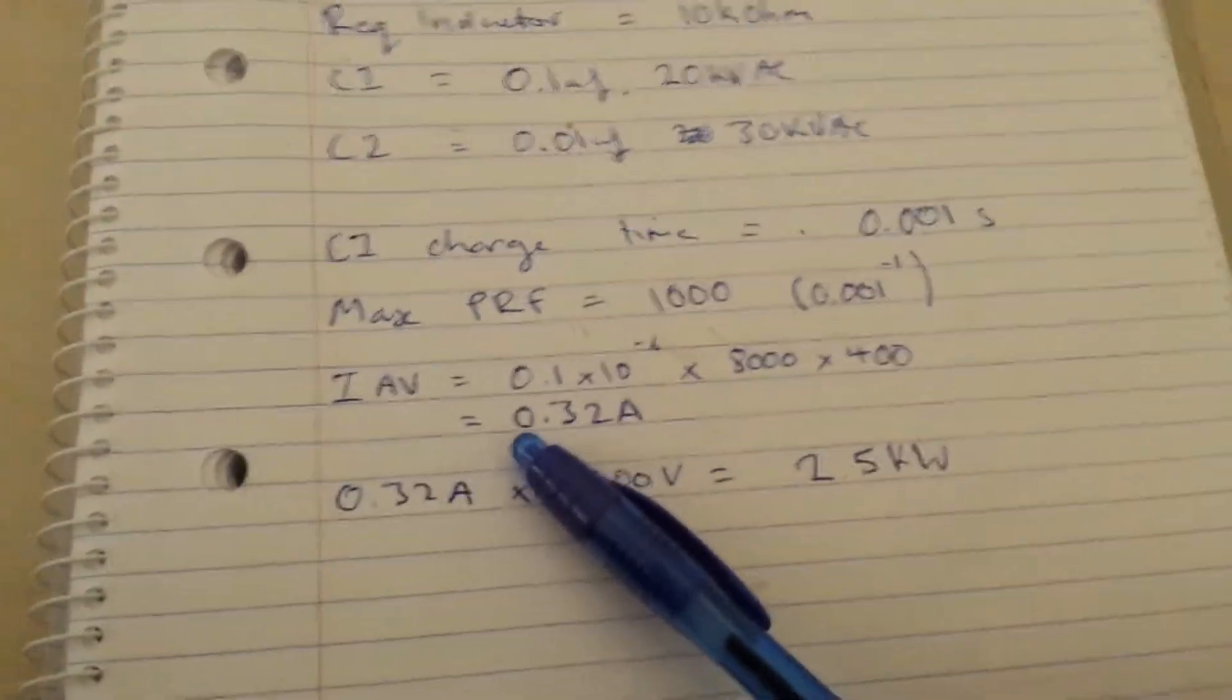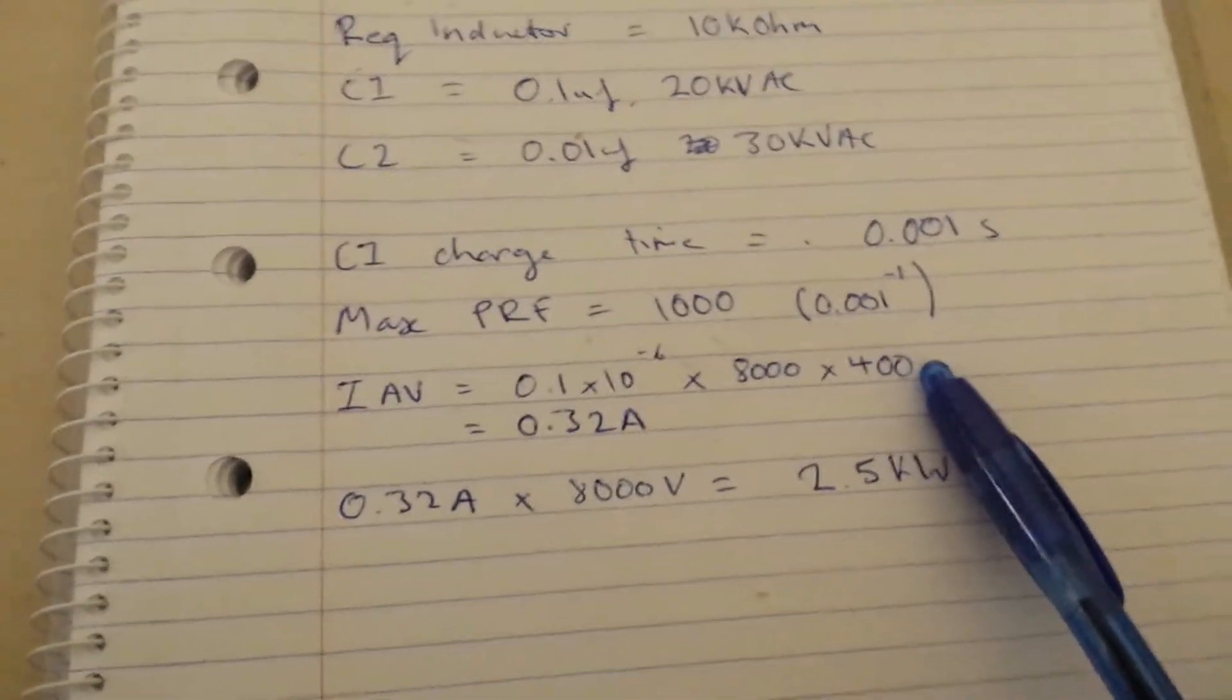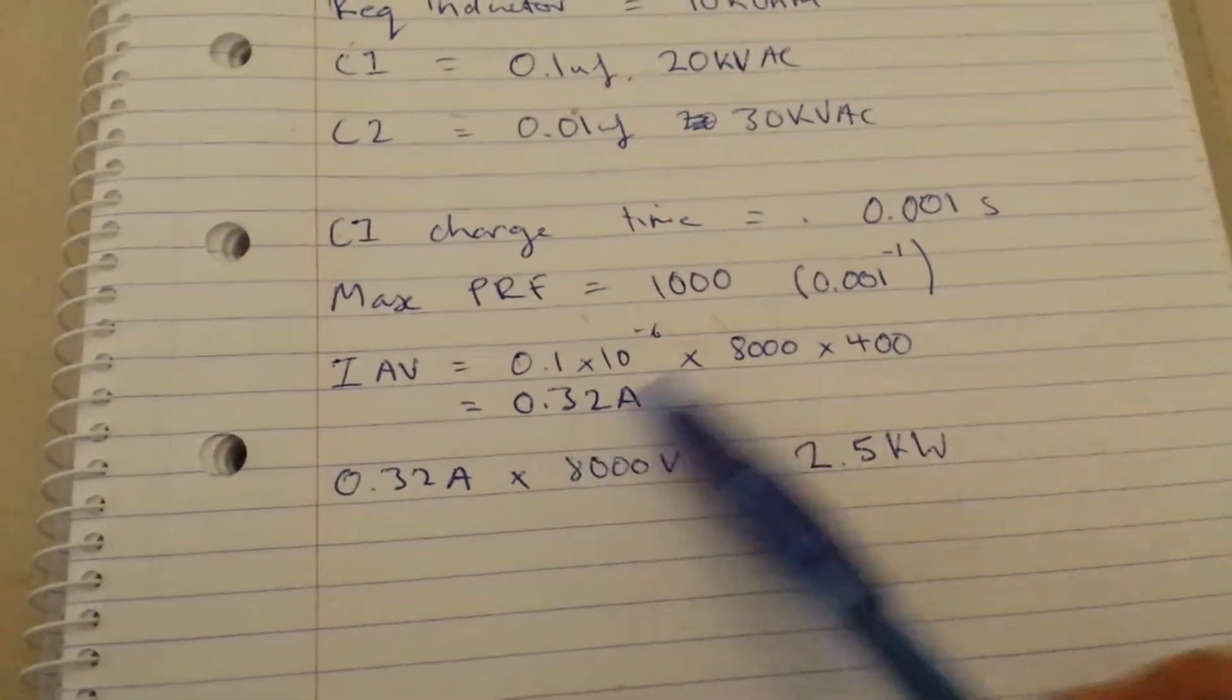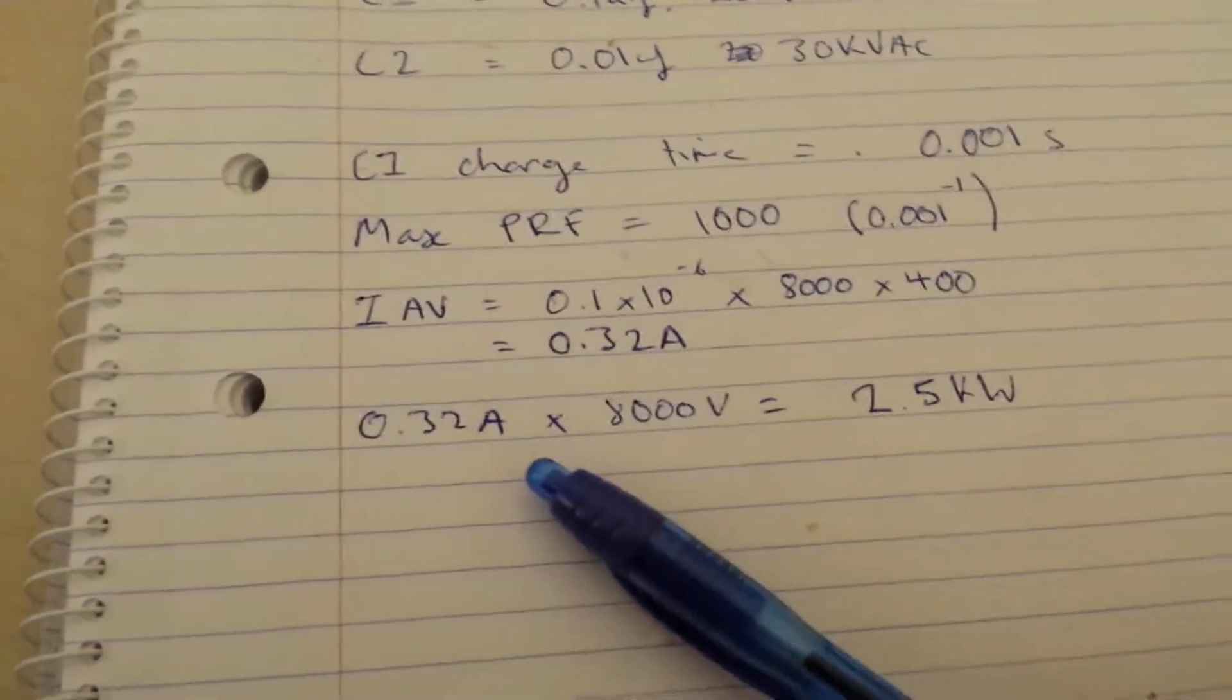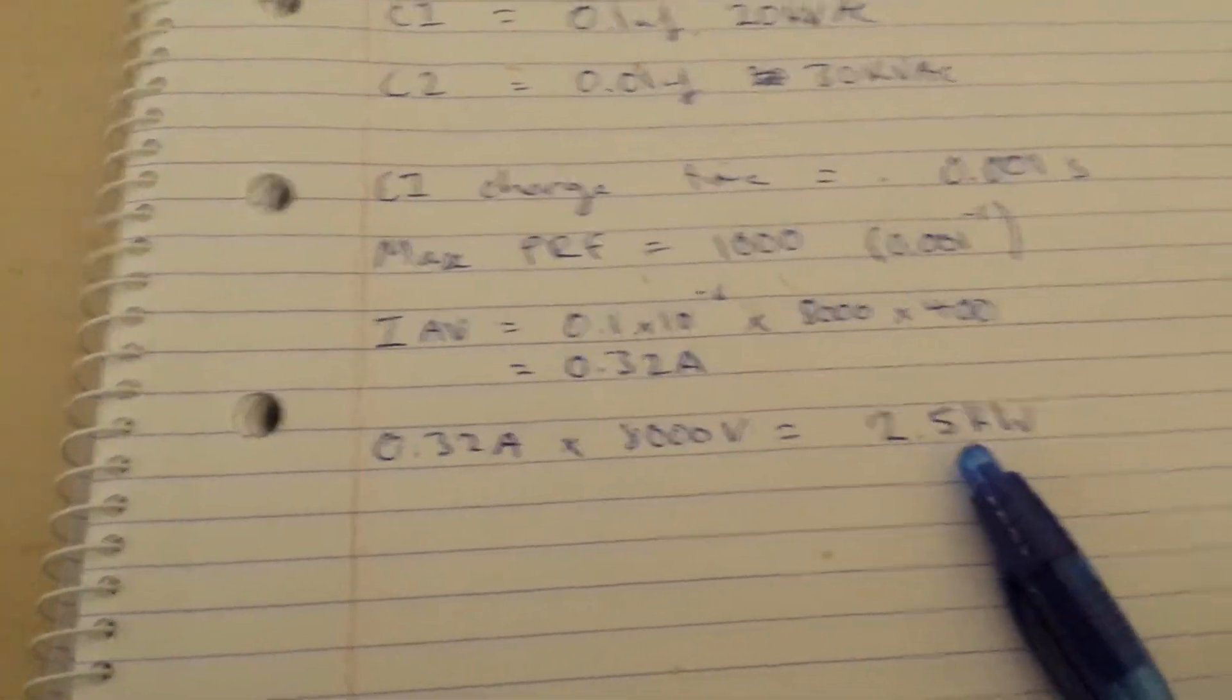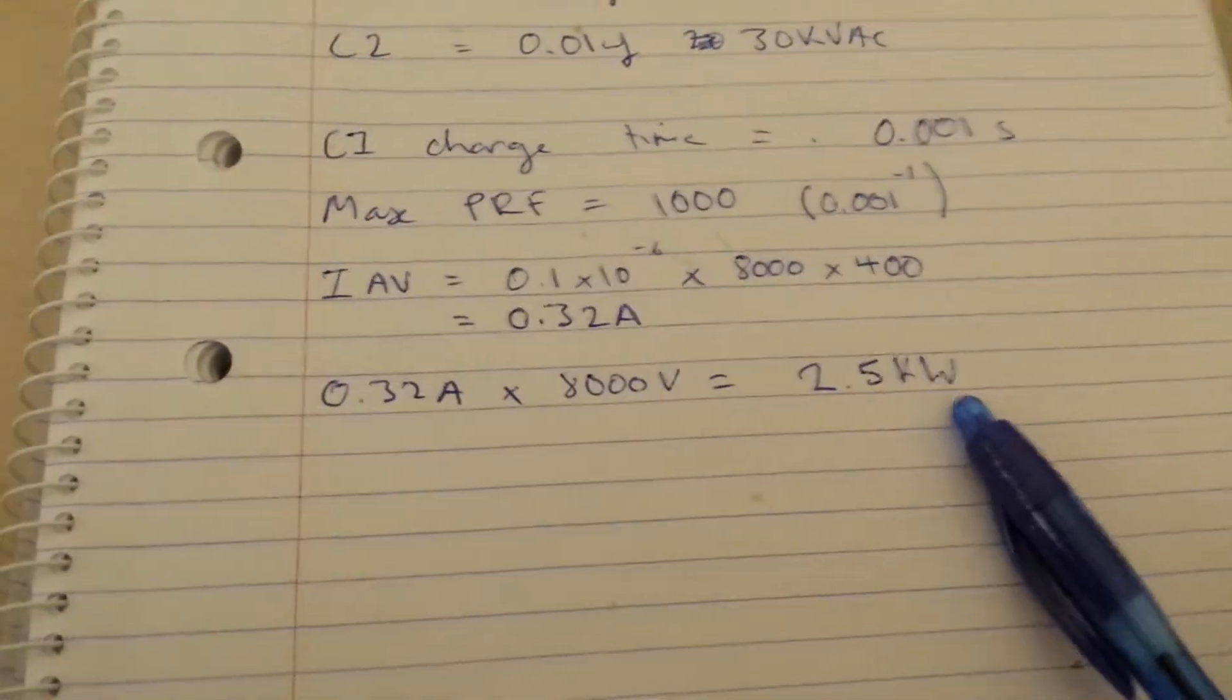Then from there we can say our average at 400 pulses per second is 320 milliamp. This is rated for 200 milliamps, so close enough. And with that sort of output we would be getting 2.5 kilowatt out of our Tesla coil.